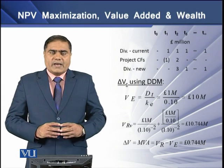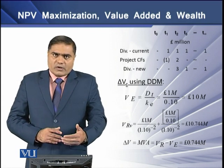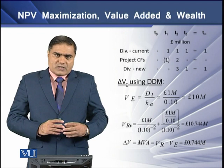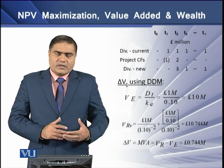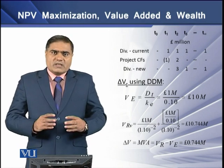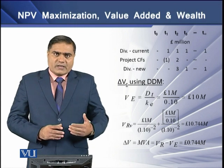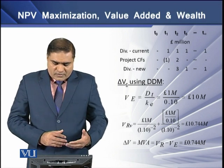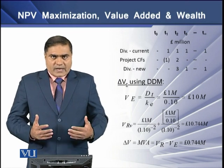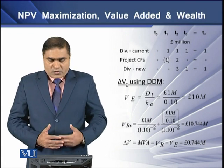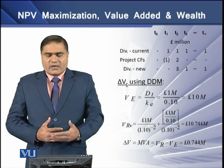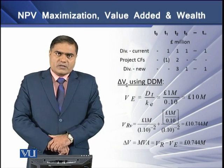Using the existing dividend policy, the firm's market value is 10 million pounds, but with the revised reinvestment plan the new market value is 10.744 million. With the reinvestment plan there is an increase in market value of 0.744 million. The change in market value of the firm equals the market value added — the difference between existing and revised market values — which is 0.744 million.